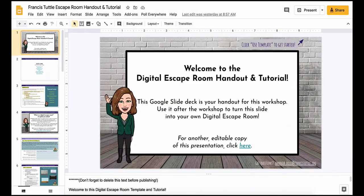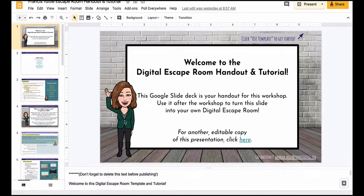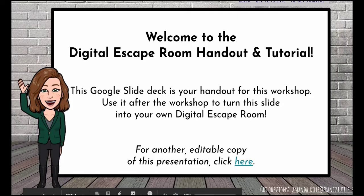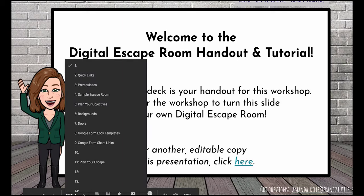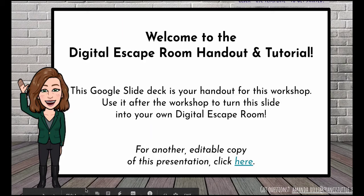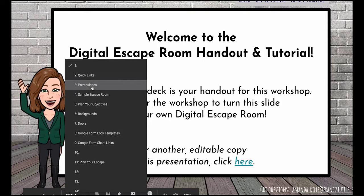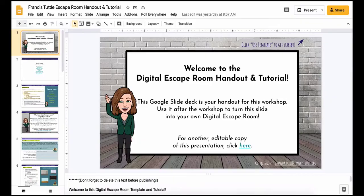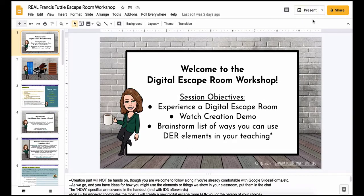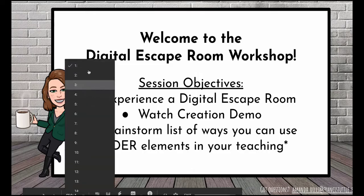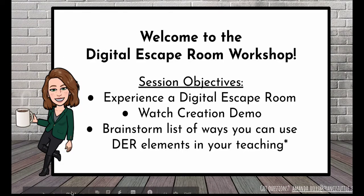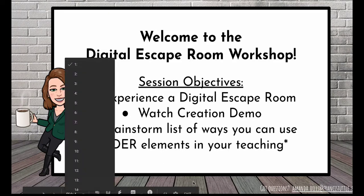Let me show you what this looks like. Here is an example of a slides presentation in which I have things titled. When I click on the little slide arrow here in presentation mode, you can see there's one called quick links, prerequisites, sample escape room, and all those different things. For contrast, here is one where I don't have those titles added. If I go to present and then go to this menu, it's just a bunch of numbers. That can make things tricky if I want to jump from slide to slide while I'm in presentation mode giving this presentation.